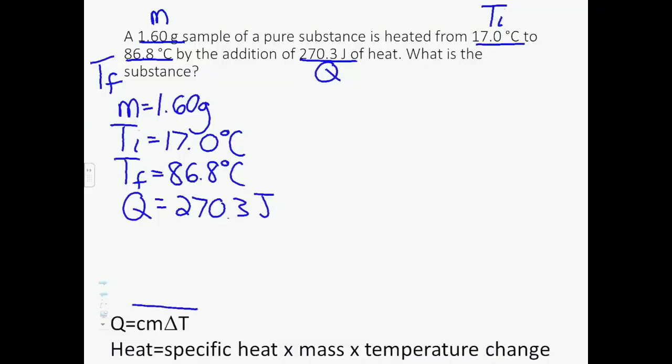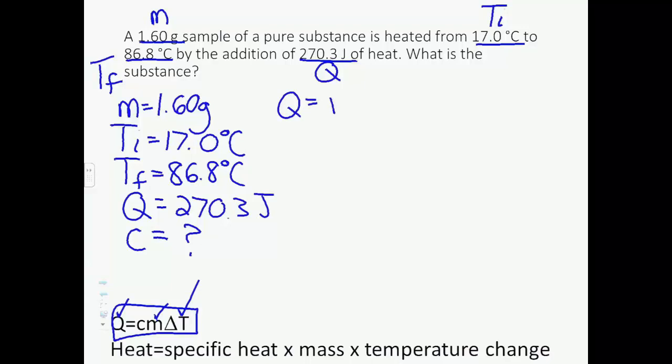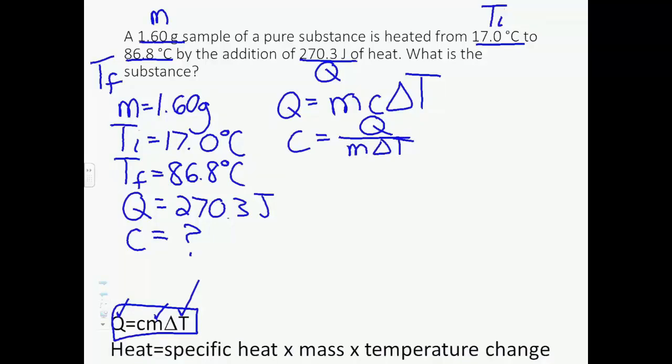Then the question just says, what is the substance? Well, if we look at our equation, no part of that equation says, oh, here's your substance. So how can we figure out the answer to this problem? What are we missing? We have mass, we have temperature, we have Q. Do we know the specific heat? No. But if we figure out the specific heat, we can then match that specific heat to our previous table and identify what our substance is. So we are solving for specific heat. Q equals mc delta T, which means C equals Q over m delta T.